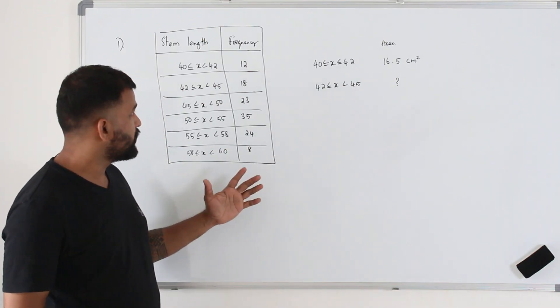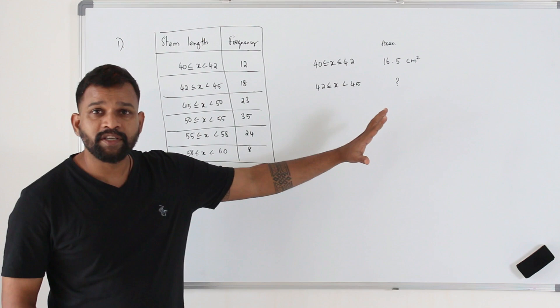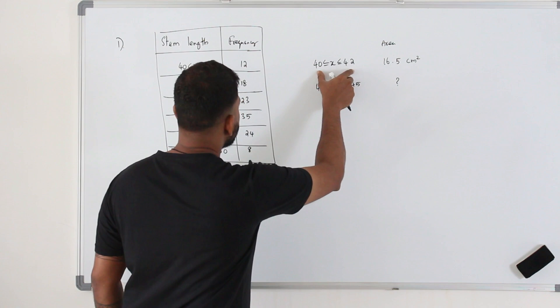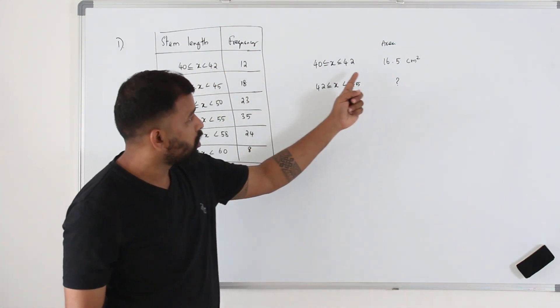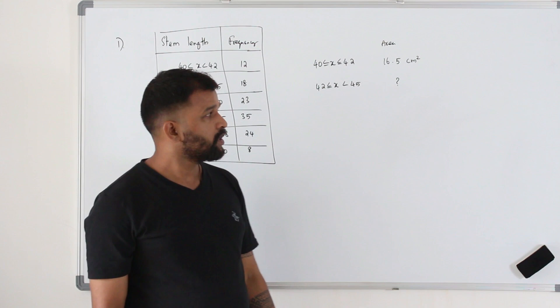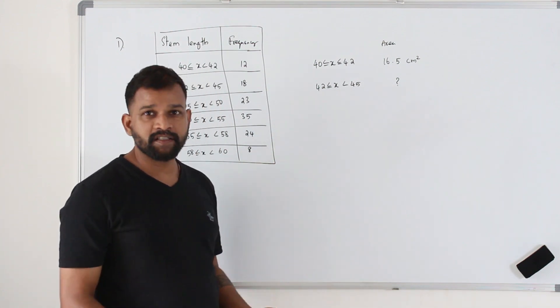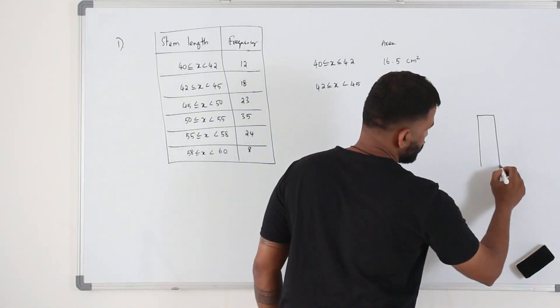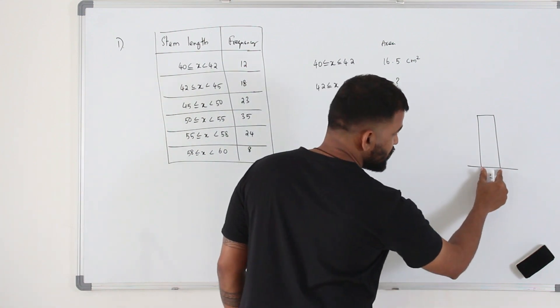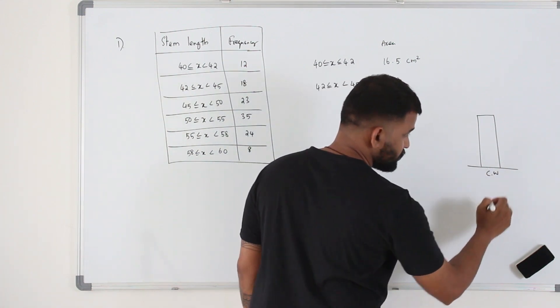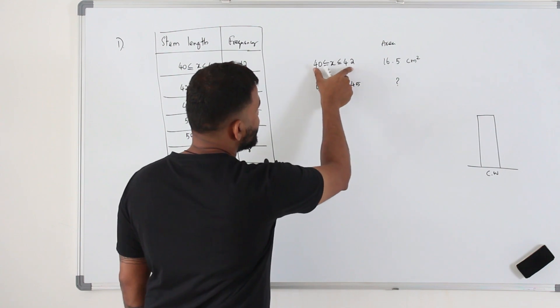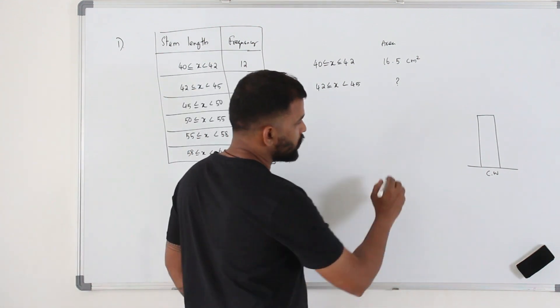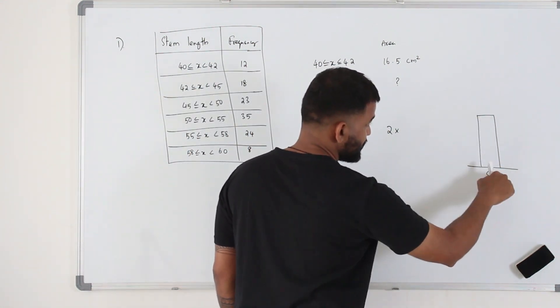So we have a grouped frequency table here, and the histogram is drawn using this table. There is a bar representing this class interval, 40 to 42. The area of the bar is 16.5. So what would be the area of the bar representing this class interval? How do we find the area of the bar? If you look at the histogram, this is the class width. The class width here is the difference between these two numbers. So 42 minus 40 is 2.